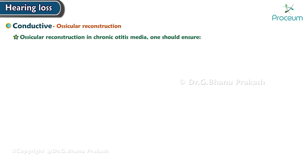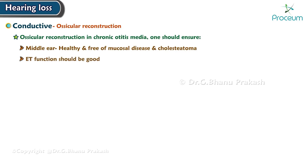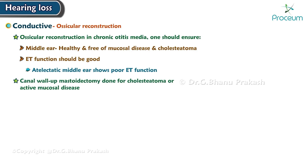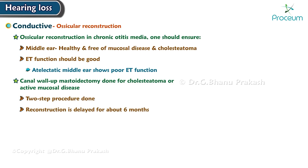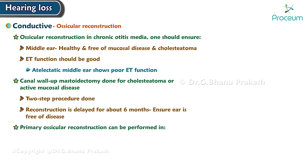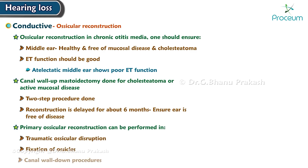At the time of ossicular reconstruction in chronic otitis media, one should ensure: the middle ear is healthy and free of mucosal disease and cholesteatoma; eustachian tube function should be good, as an atelectatic middle ear indicates poor eustachian tube function. In cases of canal wall-up mastoidectomy done for cholesteatoma or active mucosal disease, a two-step procedure is done where reconstruction is delayed for about six months to ensure the ear is disease-free. Primary ossicular reconstruction can be performed in traumatic ossicular disruption, fixation of ossicles, and canal wall-down procedures when there is no mucosal disease or cholesteatoma.